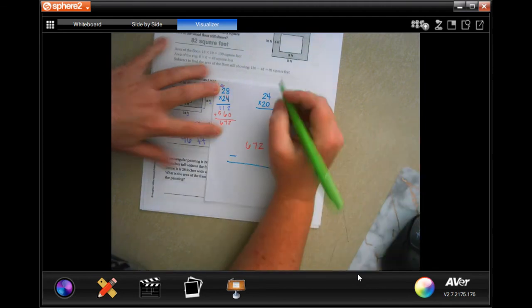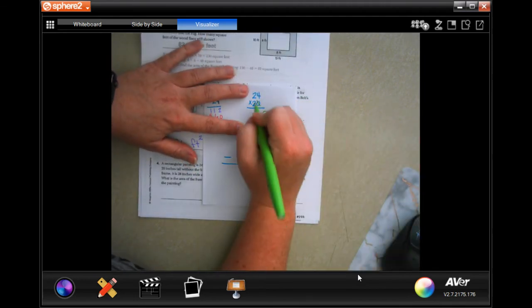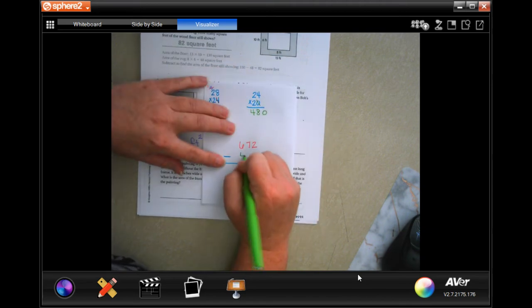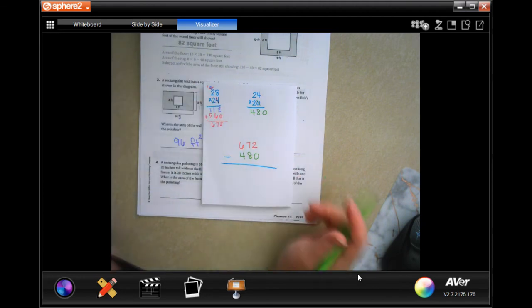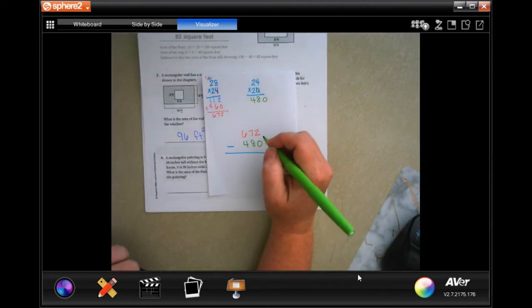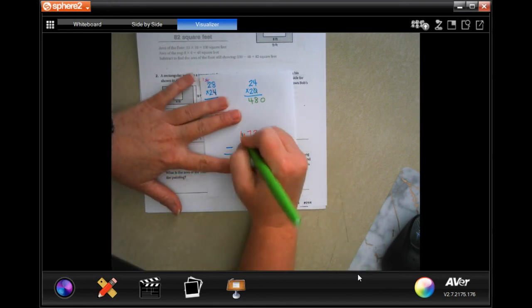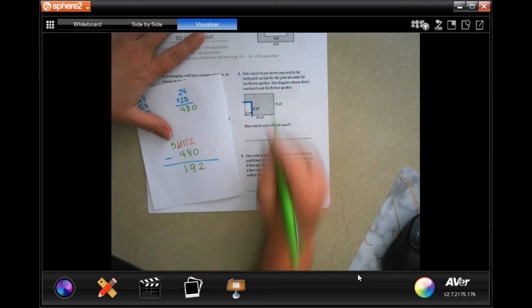And we're going to subtract. I'm going to take that 0 off. I'm going to put it right there. 2 times 4 is 8. 2 times 2 is 4. We're going to subtract 480. So now, 2 minus 0 is 2. 7 can't take away 8. I'm going to borrow 1, making it 17. 17 take away 8 is 9. And 5 minus 4 is 1.